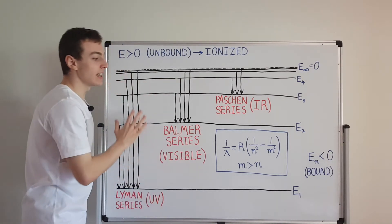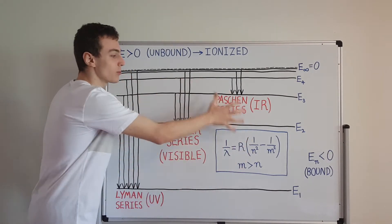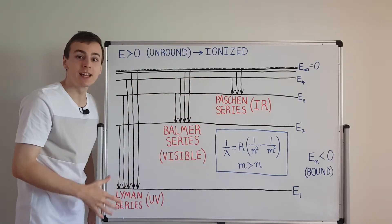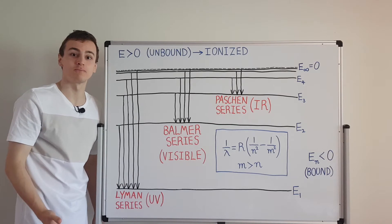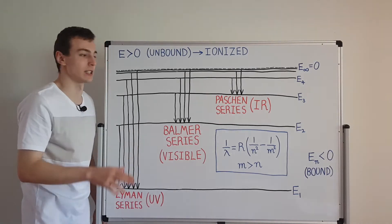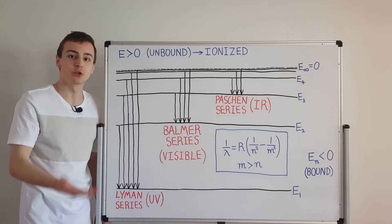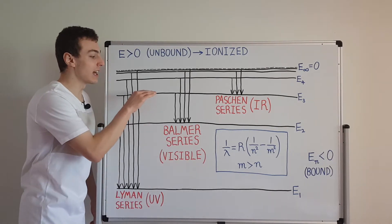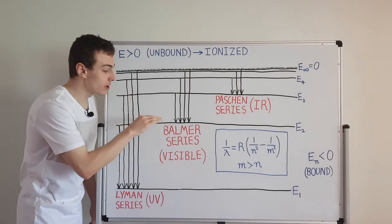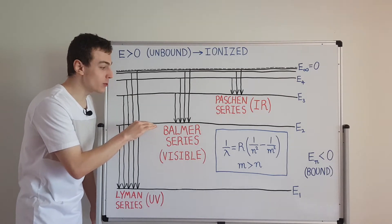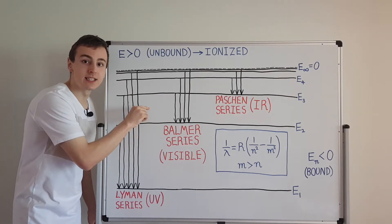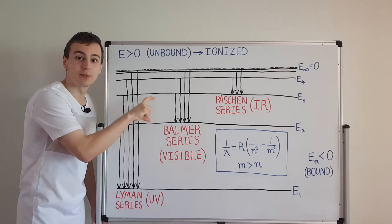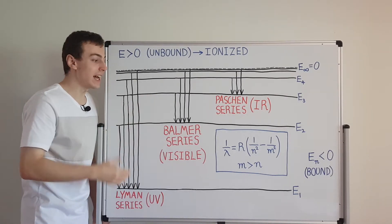This discrete region is the interesting part, because it's what's going to help us explain the hydrogen emission spectrum. Let's talk about two processes: emission and absorption. Emission happens when an electron in a higher state drops down to a lower state, and in that process it releases a photon. That photon has the same energy as the difference between those two states.